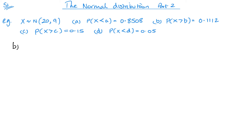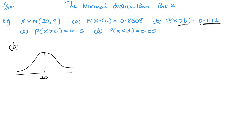Now part b — same as before, start off with a very quick sketch. We know the mean is 20, it's got quite a small area, and we're looking at P(X > b) = 0.1112. So b has to be again to the right of 20.